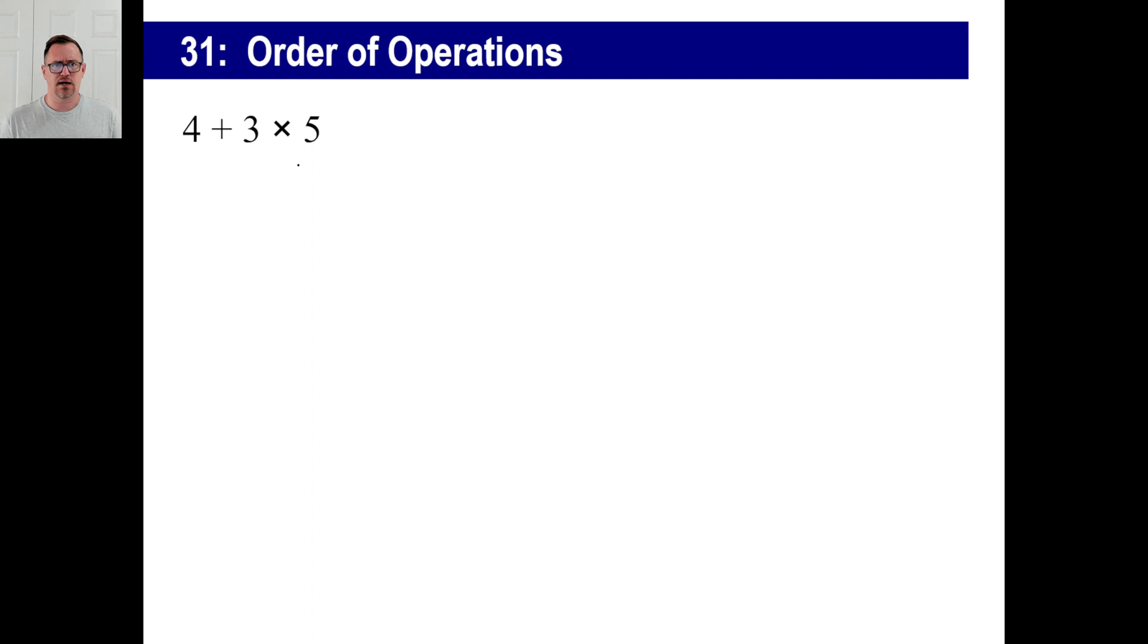They would look at this and go, okay, I have a problem here and it's going to be 4 + 3 × 5. And one of the guys went, okay, well fine, that's going to be 4 + 3, that's going to be 7. 7 × 5 is 35. And there we go.